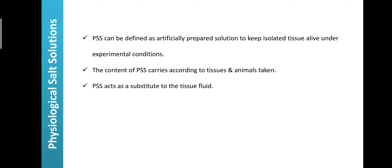For example, when you are conducting the experiment on the skeletal muscles of frog, you should use the frog Ringer solution. If you are taking the rat uterus to study the uterus contraction property of a drug, on that occasion you should use the De-Jalon solution. The solution should be prepared according to the type of tissues and animals.